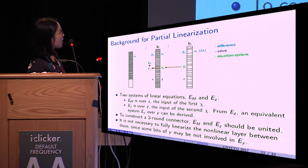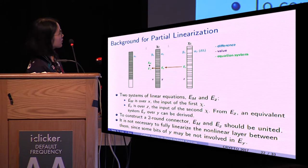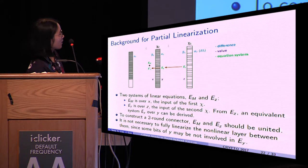From Ez, an equivalent system EY can be derived, since between V and Y is the linear mapping L.